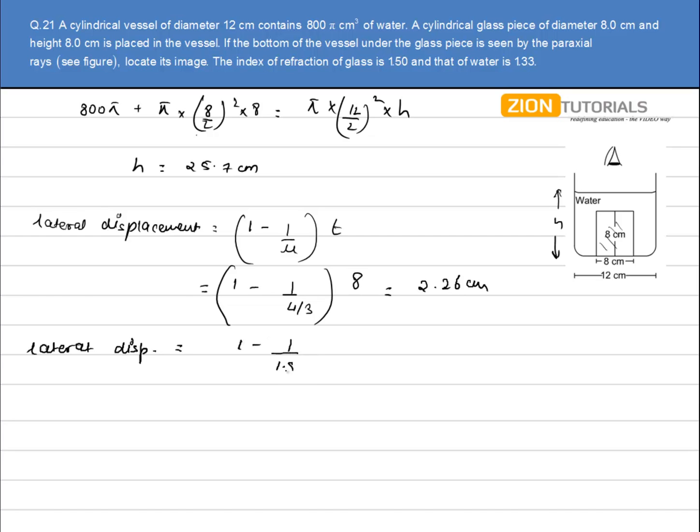For water, the displacement is (1 - 1/1.3) times the thickness of water. The water thickness will not be h; it will be only this distance, because refraction is taking place only due to this thickness. So it will be 25.7 - 8, which comes out to be 4.44 cm.